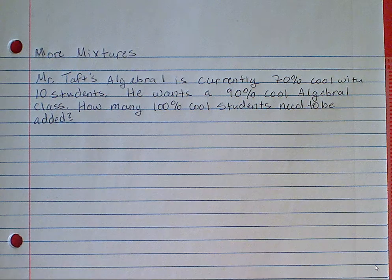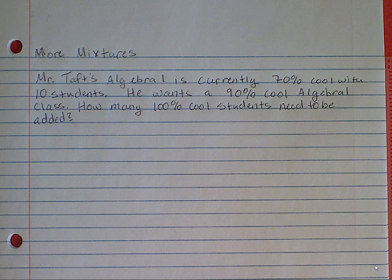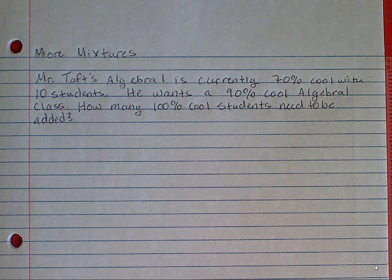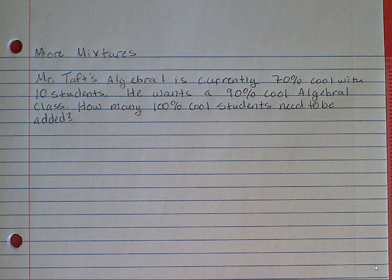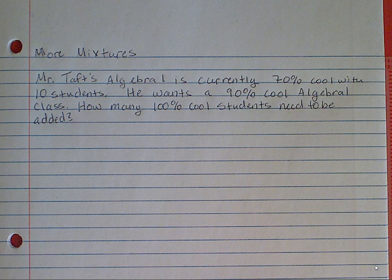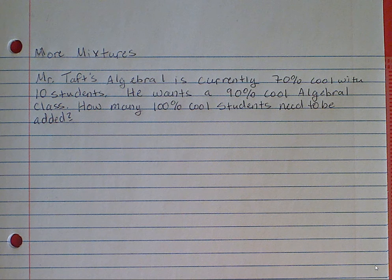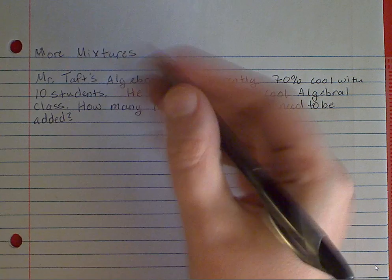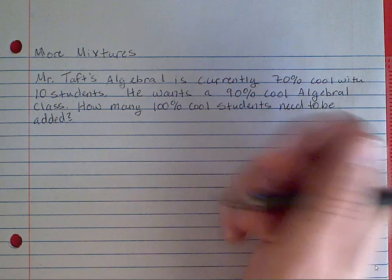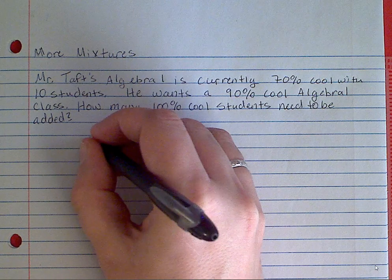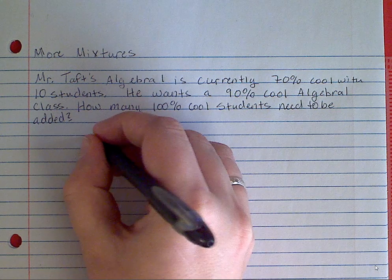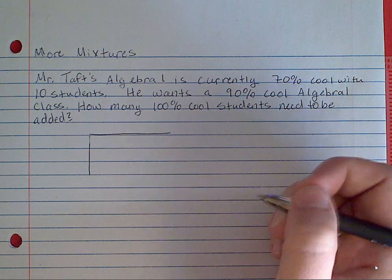So this takes the mixture problem and makes it just a tiny bit more difficult. What we were looking for before was: you knew the amount of thing 1 and the percent of thing 1, the amount of thing 2 and the percent of thing 2, and you were finding the percent of the mixture. So what we're doing right now is we know the amount of thing 1 and the percent of thing 1, we don't know the amount of thing 2 but we know the percent of thing 2, and we're trying to figure out how many we need to add to make a specific percent for the mixture. We're just moving around where the x is going to be, and it makes the problem a tiny bit more difficult, but we've been doing enough multi-step equations that it shouldn't be too difficult.